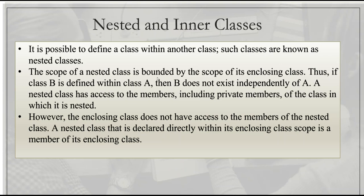Nested classes are created within a scope. The scope of nested classes is bounded by the scope of the enclosing class. If class B is defined within class A, B does not exist or access independently outside of A. A particular class item is defined within that scope.